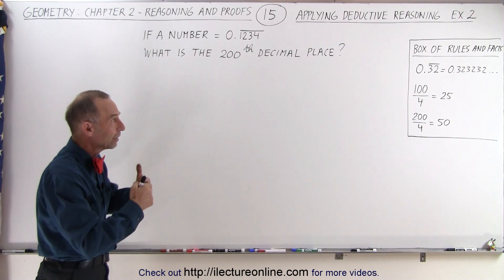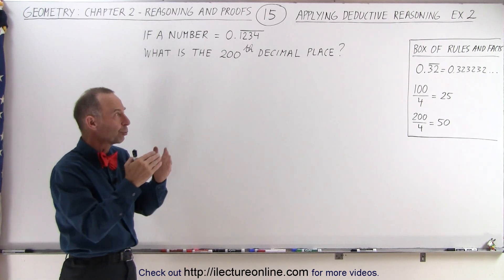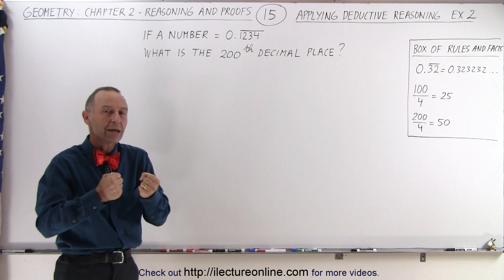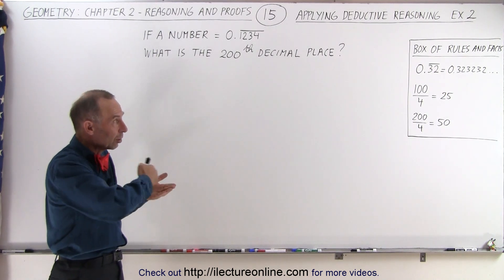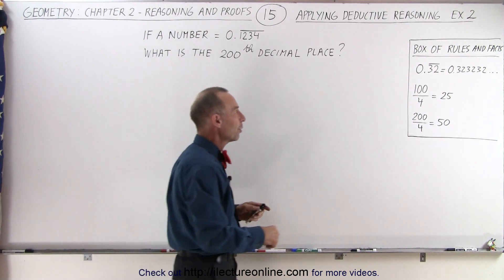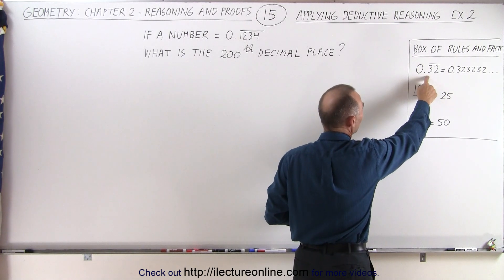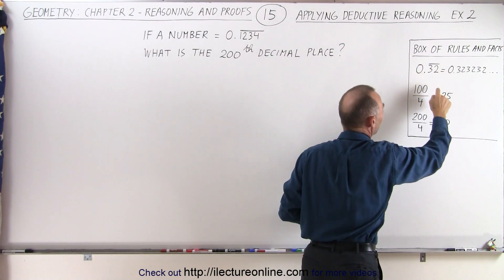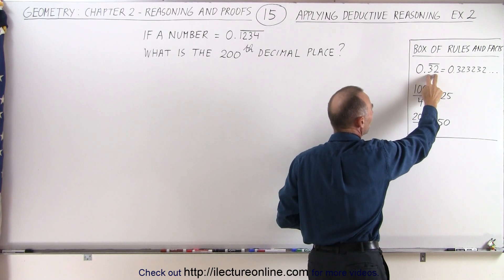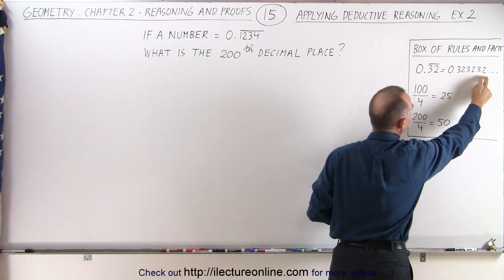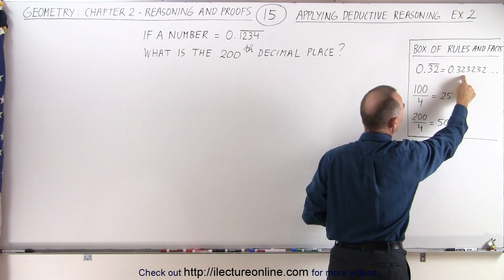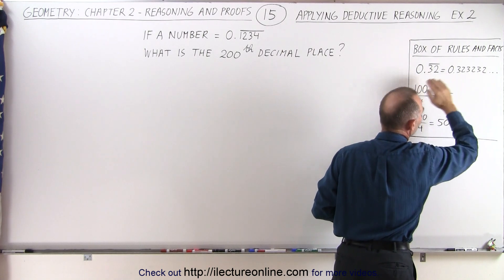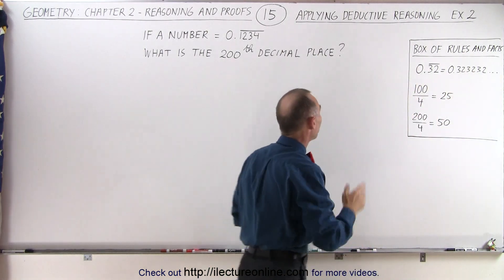What we need to have in front of us is a box of rules and facts, things that we can rely on to help us solve this problem in a logical fashion. First of all, we need to understand the concept of a number like zero point and some decimal places with a line on top, which means that those numbers keep repeating over and over again. So it's 0.323232 and so forth forever. And so based upon that...